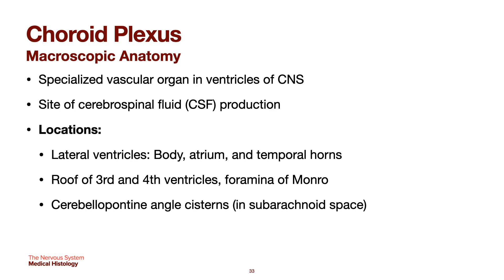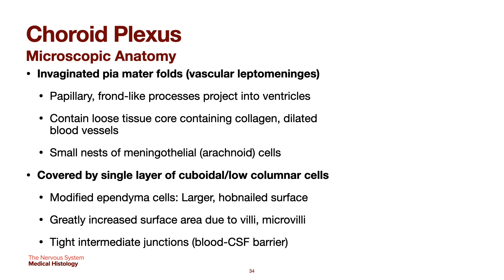Now we move to the last portion: the choroid plexus. In macroscopic anatomy, it is a specialized vascular organ in the ventricles of your CNS and the site of CSF production. Locations include the lateral ventricles, roof of the third and fourth ventricles, and the cerebellopontine angle cisterns in the subarachnoid space. It has invaginated pia mater folds or vascular leptomeninges — papillary frond-like processes projecting into the ventricles — containing loose tissue with collagen, dilated blood vessels, and small nests of meningothelial arachnoid cells. They are covered by a single layer of cuboidal to low columnar modified ependymal cells with a hobnail surface, greatly increased surface area due to microvilli, and tight junctions forming the blood-CSF barrier.